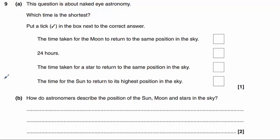And the final question, question number nine, is about naked eye astronomy. Which time is the shortest? The time taken for the moon to return to the same position in the sky. Well, the moon orbits the earth in approximately 28 days.